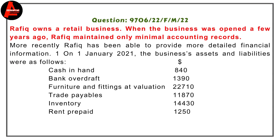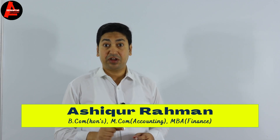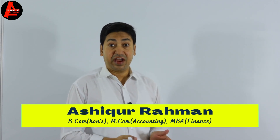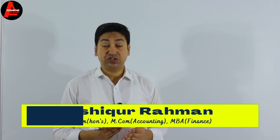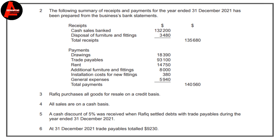Let's have a look at question number one. We have some assets and liabilities: cash in hand, bank overdraft, furniture and fittings, trade payables, inventory, and rent prepaid. Our relevant item is trade payables — it is the opening trade payable. The date mentioned is 1st January 2021. Then in number two, we have a summary of receipts and payments for the year ended 31 December 2021. The relevant item here is trade payables: $93,100.